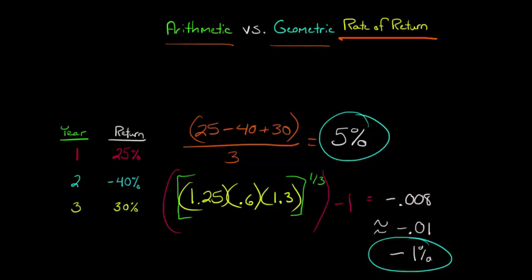When you're using the arithmetic return, it's not really considering any of the volatility and how the balance that is earning whatever rate at the beginning of year two or beginning of year three—it's not considering how that balance changes over time. It's just taking the average rate of return. So that's really what's driving the difference. So you might wonder, why would we ever use the arithmetic rate of return?